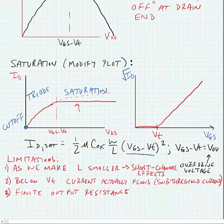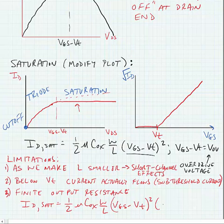And the way that we model this is by modifying our current in saturation to include the effect. So we add this one plus lambda times VDS term. And lambda is the channel length modulation parameter. And it leads to output resistance. And this is a device-dependent parameter, depends on the manufacturing process.